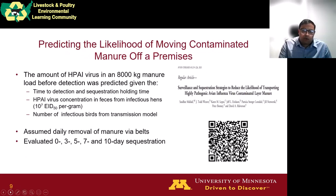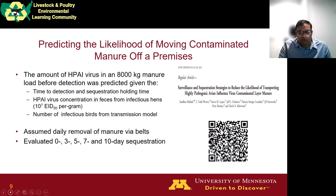We predicted the amount of HPAI virus in an 8,000 kg manure load that could be moved before detection from a 100,000-bird layer house. We considered various factors such as time to detection and sequestration holding time, and the HPAI virus concentration in feces from infectious hens — using a value of 10 to the power of 7 EID50 per gram — and the number of infectious birds from the transmission model output. We conservatively assumed daily removal of manure through the belts, and we evaluated various sequestration periods from 0 to 10 days. We have an article on this analysis published in Avian Diseases.